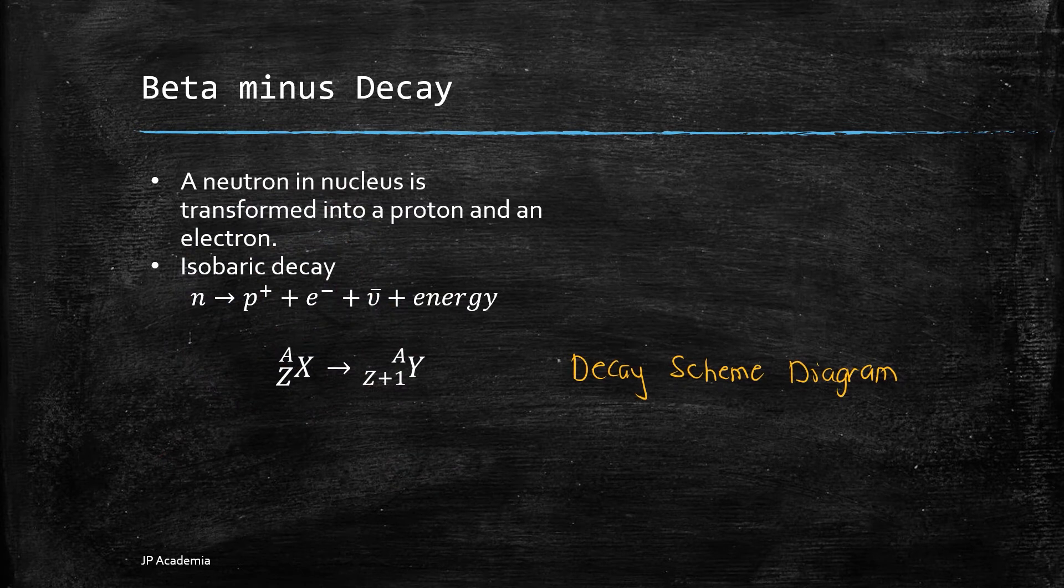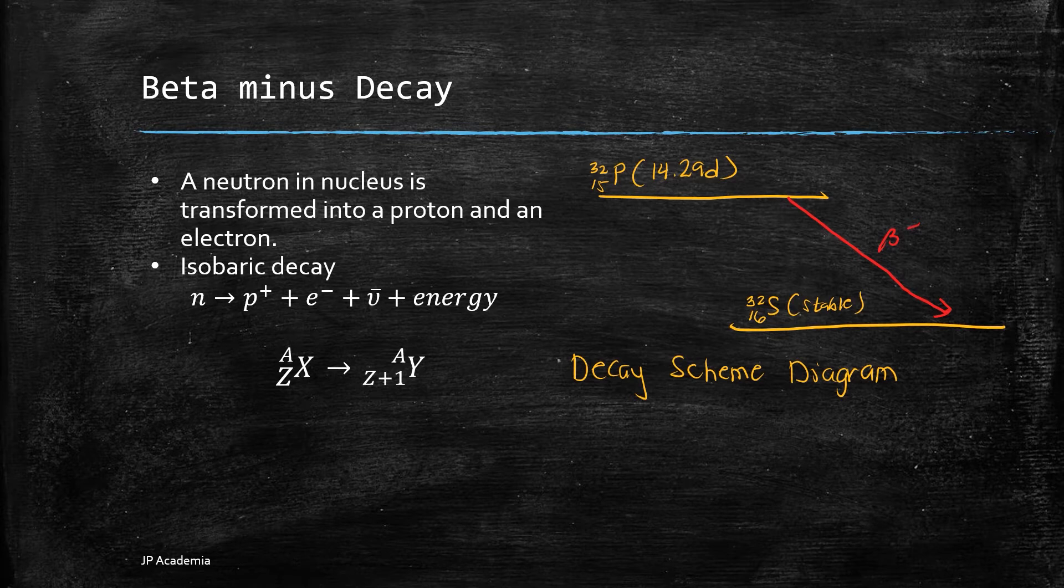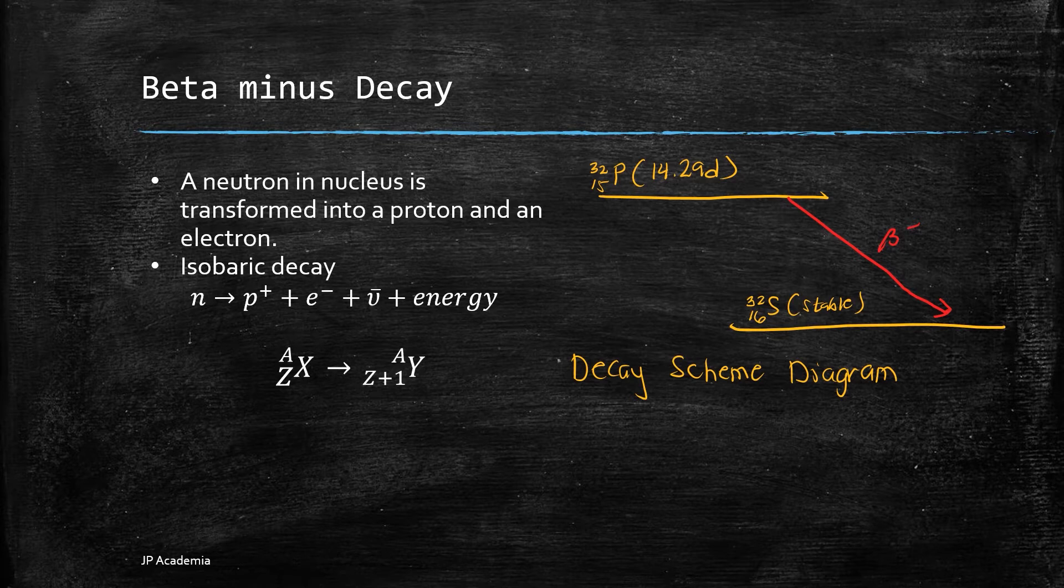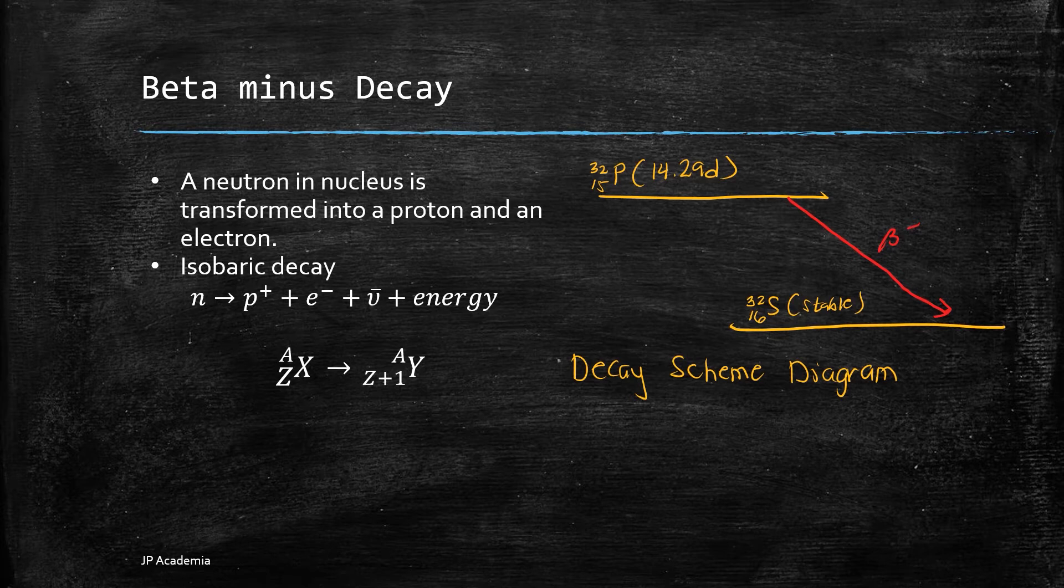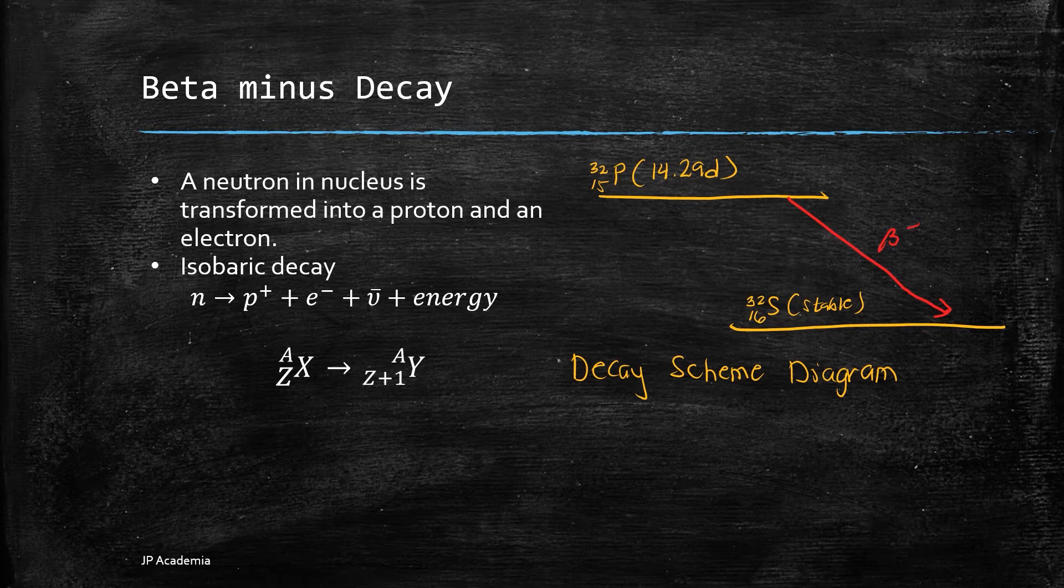If the ratio of neutron to proton is too high, the nuclei would be unstable. One possible decay mode is the conversion of internal neutron into proton accompanied by the emission of an electron or beta minus particle from the nucleus and an anti-neutrino. Note that neutrino is a particle with no mass or electrical charge, but it carries away a fraction of energy released in the process. As shown in this standard nuclear notation, the parent nuclide X decays to a daughter product Y, which represents a different chemical element. Therefore, beta minus results in elemental transmutation.